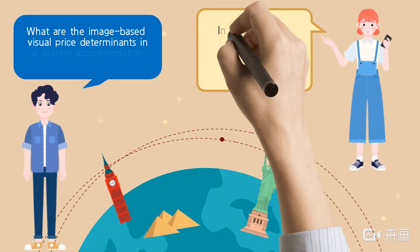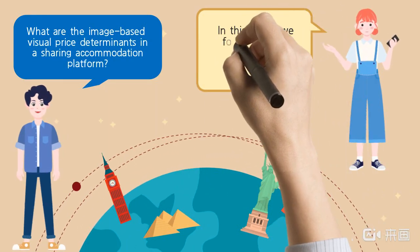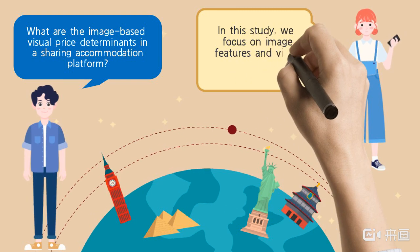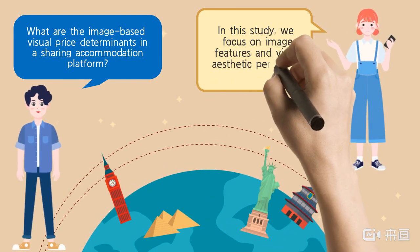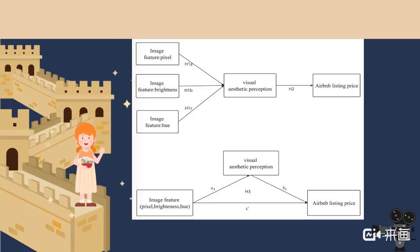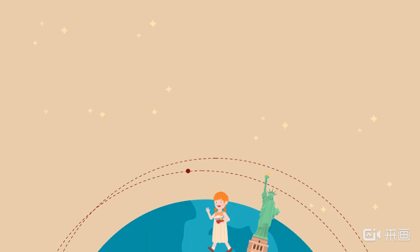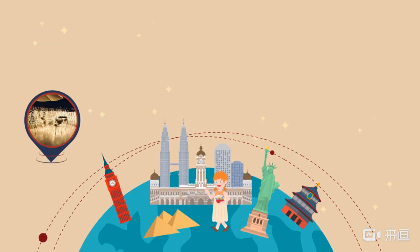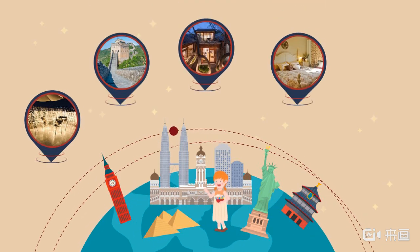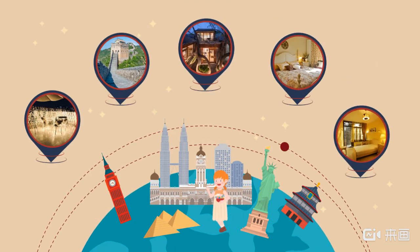What are the image-based visual price determinants in a sharing accommodation platform? In this study, we focus on image features and visual aesthetic perception. This study explores how image features affect Airbnb listing price on a sharing accommodation platform. After a lot of empirical research, the preferences are driven by four factors based on a SOR model and a hedonic price model.